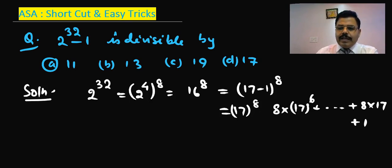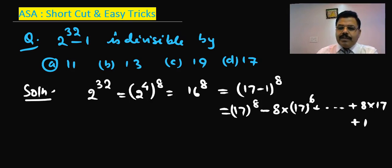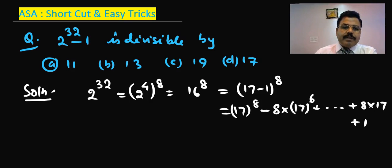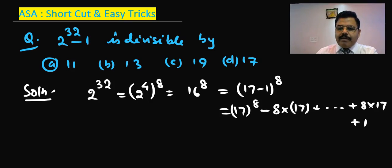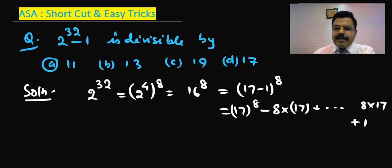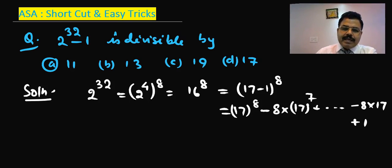So the first term will be negative and the last term will be positive because the power is even. After 8, the next power will be 7, and all odd-power terms will be negative, while the final term with power 1 will also be negative. So the signs will alternate: plus, minus, plus, minus. All of this is the expansion of 2 to the power 32.